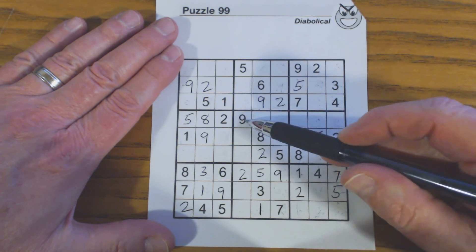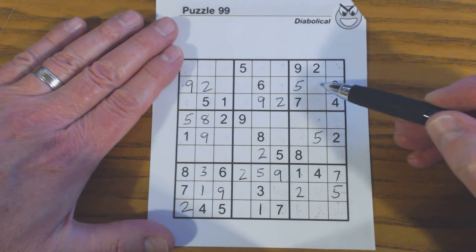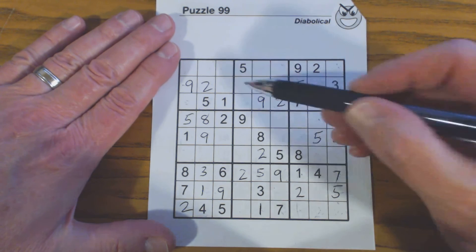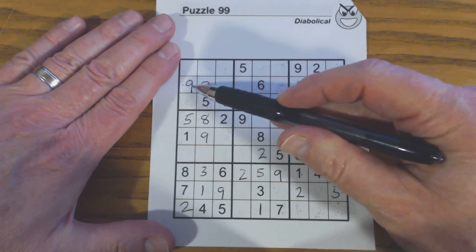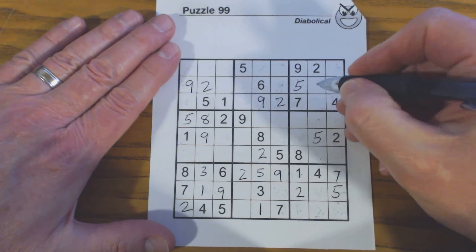This one's a 1, 3, or 7 because we've got a 9 there. And this one here is 1, 3, 7, 9. So we know that's a 1.